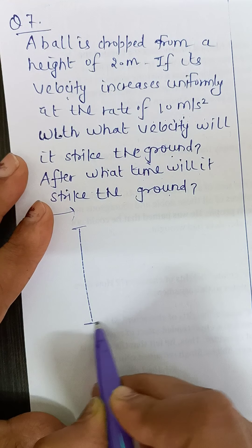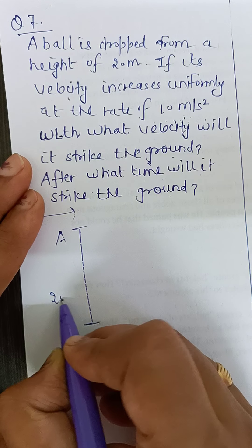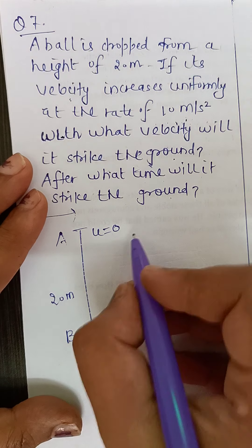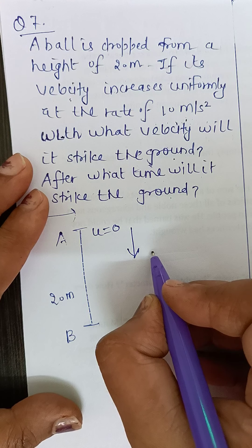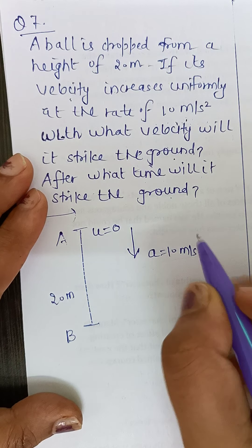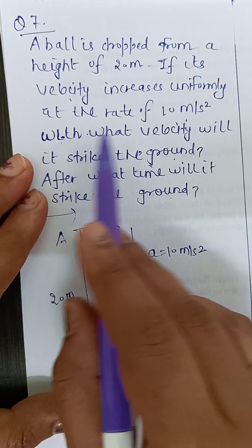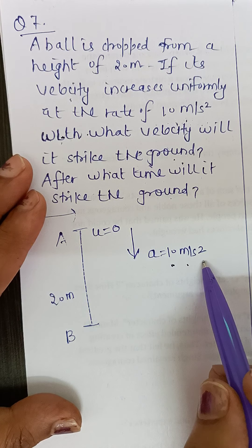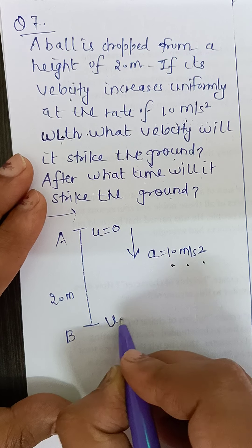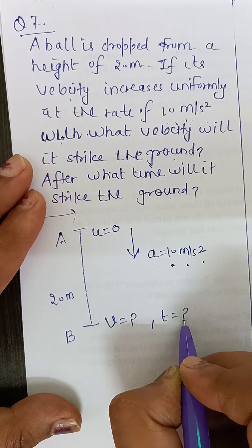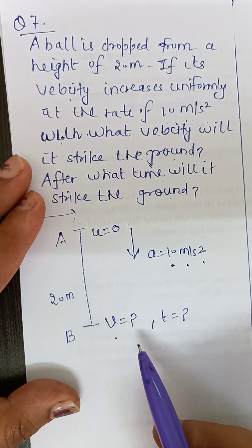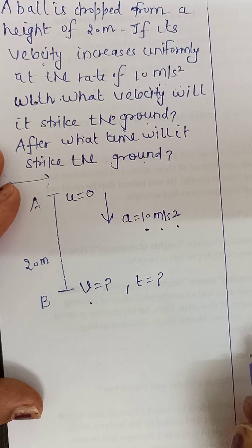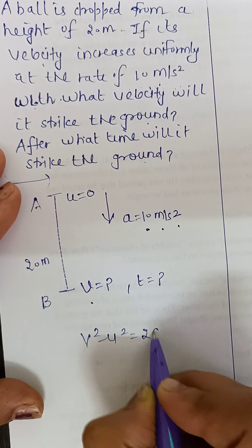Basically, if I convert it in figure form, a ball is dropped from point A, covering a height of 20 meter. Now here, when we drop the body, then the initial speed is 0, and velocity will increase, why? Because there will be acceleration, 10 meter per second square. See, this line is velocity increases uniformly at the rate of 10 meter per second square, its meaning is this acceleration is given to be 10 meter per second square. With what velocity will it strike the ground and after how much time will it strike the ground?